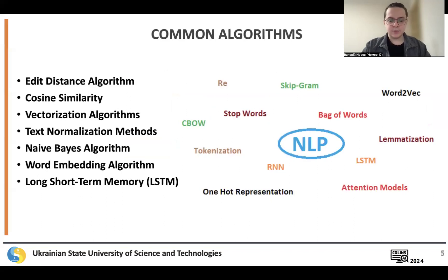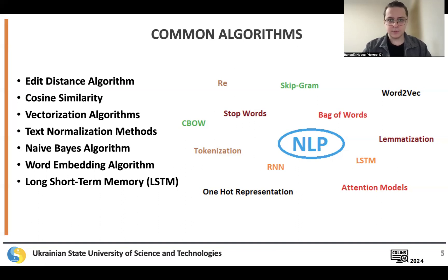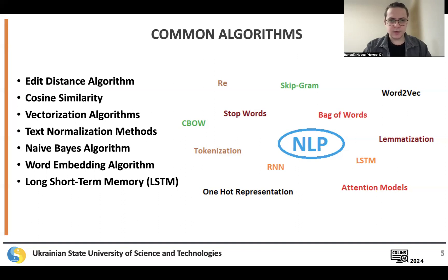On this slide, you can see the most basic algorithms used in NLP. When it comes to Amazon Lex Version 2, the following should be highlighted: neural network models for intent classification and slot filling; deep learning architectures such as recurrent neural networks or transformer models for natural language understanding tasks; named entity recognition algorithms for identifying and extracting entities from user utterances; probabilistic models for language understanding and dialogue management; statistical methods for text processing and analysis; and machine learning algorithms for intent matching and context handling.